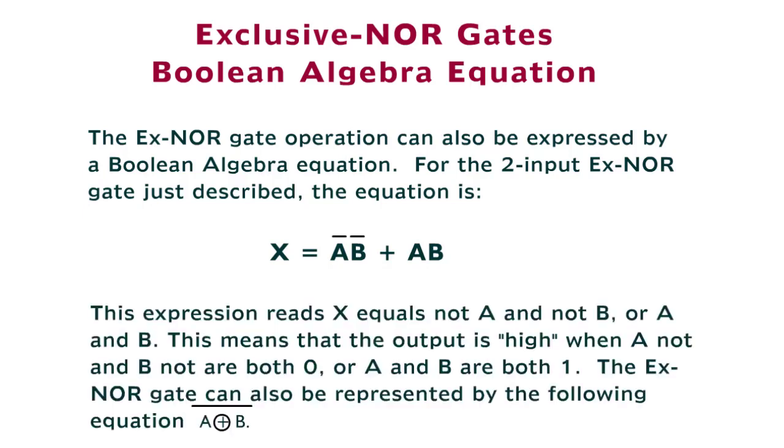This expression reads: X equals NOT A and NOT B, or A AND B. This means that the output is high when A-NOT and B-NOT are both 0 or A and B are both 1. The X-NOR gate can also be represented by the following equation.